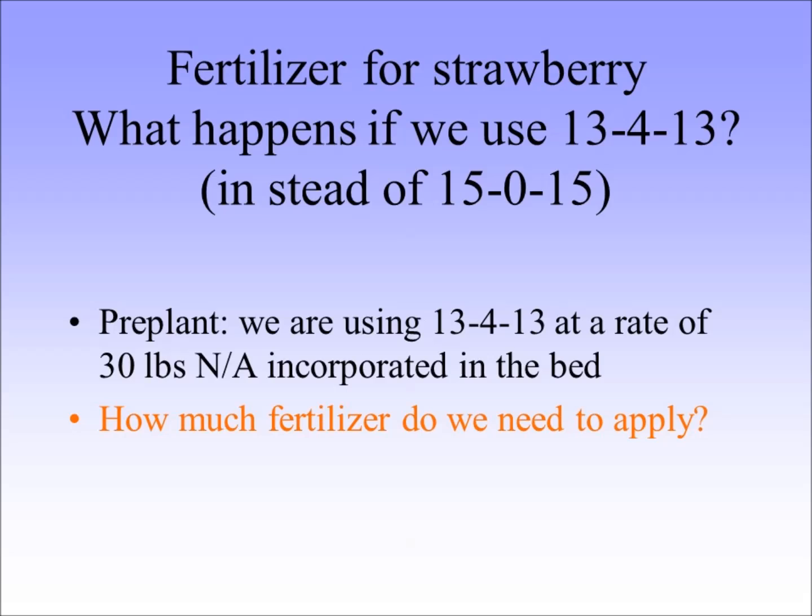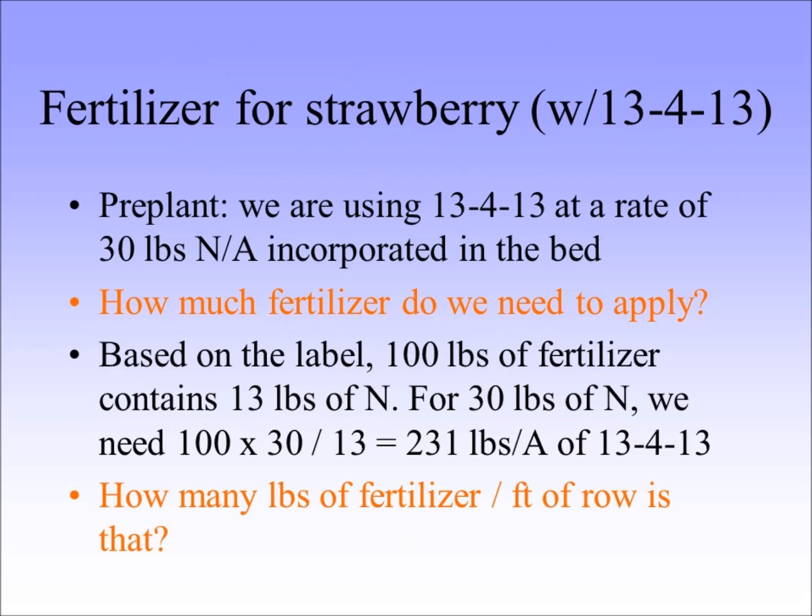Just for the sake of fun — what happens if you can only find the 13-13 and not the 15-15 that you wanted? How much are we applying and how much do we need to put? Based on the label, 100 pounds of fertilizer contains 13 pounds of N, and so to put 30 pounds of N, we need 100 times 30 divided by 13, which would be 231 pounds of the fertilizer.